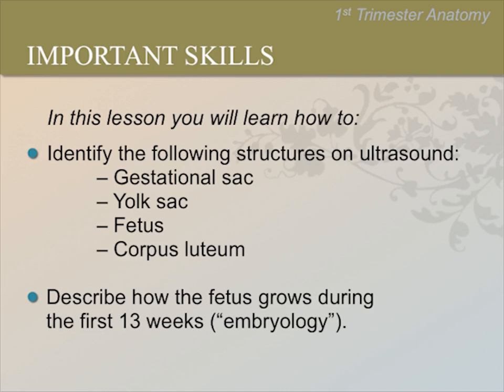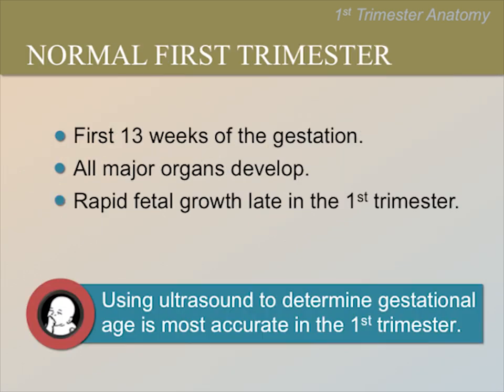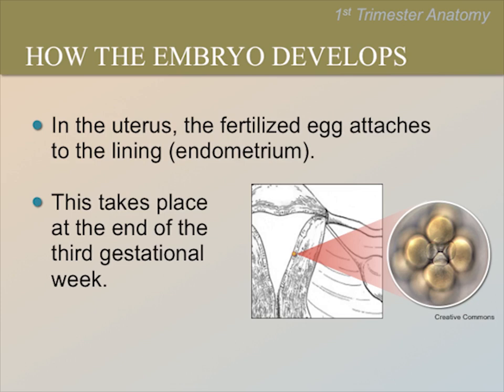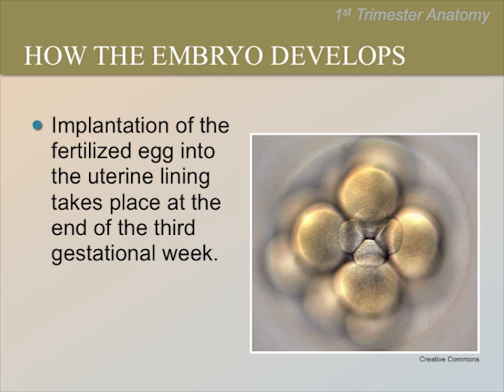The term embryology means the process of how a fetus develops. During the first 13 weeks, all of the major organs will develop and the fetus grows very fast. The first trimester is also important because it is the most accurate time in pregnancy to determine the gestational age. The egg is formed in the ovary and travels along the fallopian tube where it is fertilized on its way to the uterus by sperm. It takes several days for the egg to reach the uterus. Once the egg is fertilized and reaches the uterus, it begins to attach to the uterine lining called endometrium where it further divides and grows.